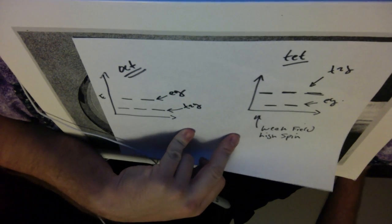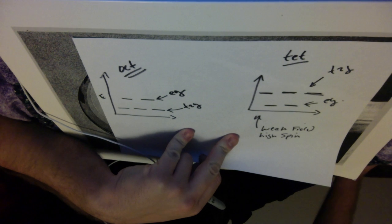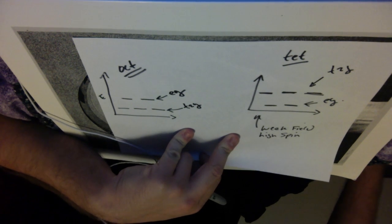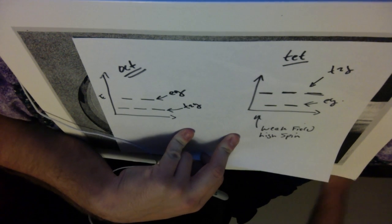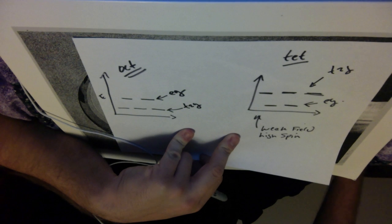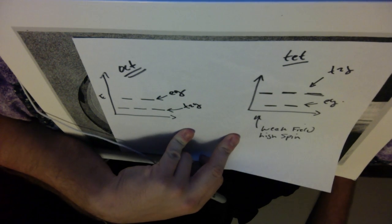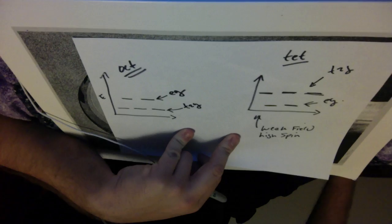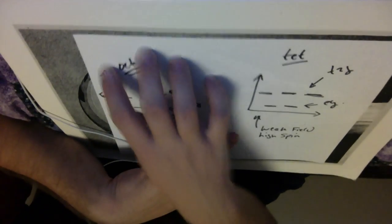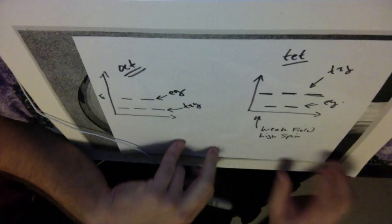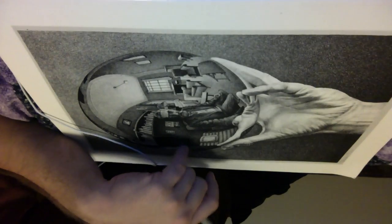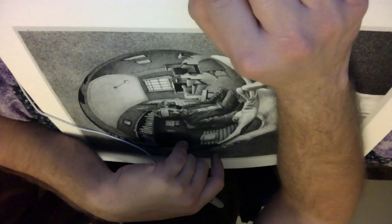I think in the next video we will talk about square planar complex geometry and the exceptions there because that's yet another exception and it's a different type of geometry. So in all we'll have covered the octahedral, the tetrahedral and then the square planar complex geometry. Okay guys, thanks for hanging in there.